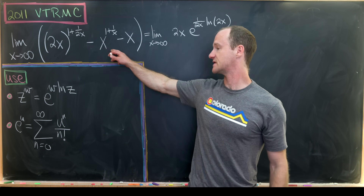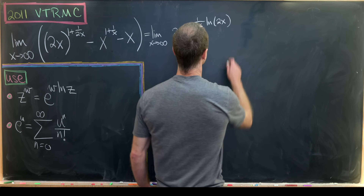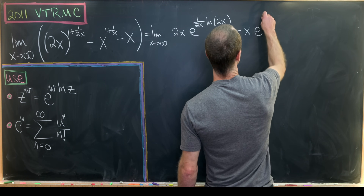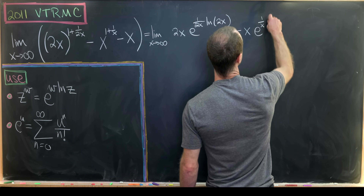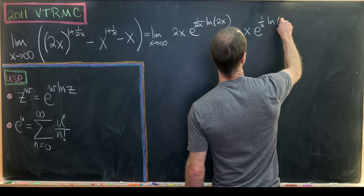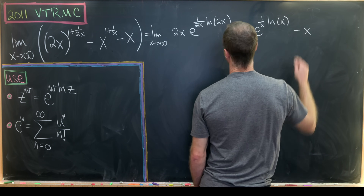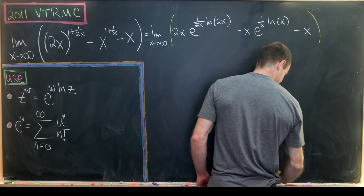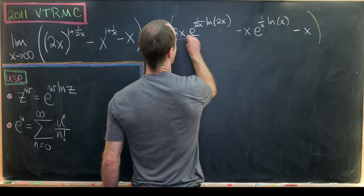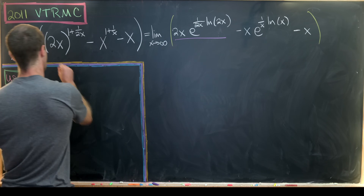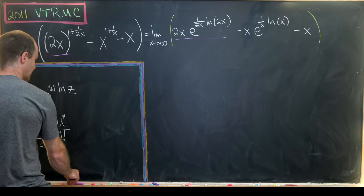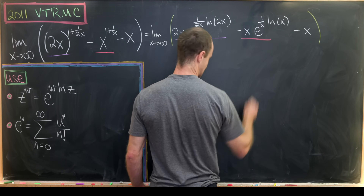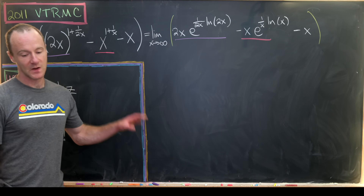We do the same thing for the second term: minus x times e to the quantity (1 over x) times the natural log of x, and then finally minus x. So the term underlined in purple is a rewriting of the original first term, and the term underlined in red is a rewriting of the second term.